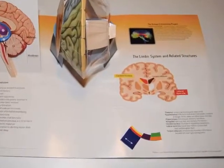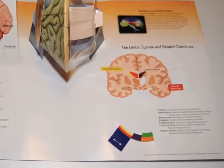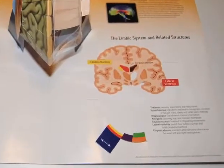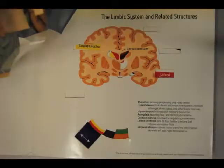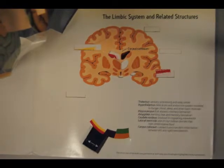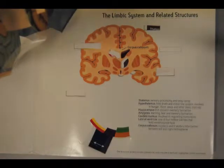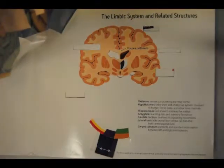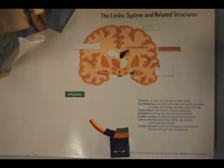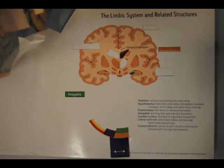A third cross-section view of the limbic system and related structures helps students understand how limbic system structures are situated on both sides of the brain's two hemispheres. Turning a wheel highlights the color-coded labels and locations for structures and allows students to test themselves.